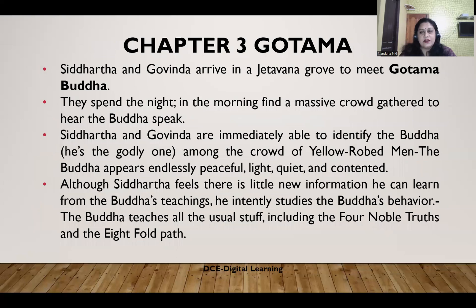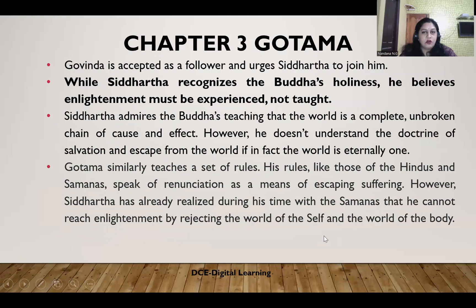Chapter 3 is titled 'Gautama.' Siddhartha and Govinda arrive in Jitavana Grove to meet Gautama Buddha. They spend the night, and in the morning they are overwhelmed to find a massive crowd gathered to hear the Buddha speak. Siddhartha and Govinda immediately identify the Buddha — he appears endlessly peaceful, quiet, and contented. Although Siddhartha feels there is little new information he can learn from Buddha's teachings, he intently studies the Buddha's behavior. The Buddha's teaching covers the four noble truths and the eightfold path. Govinda is accepted as a follower and urges Siddhartha to join him, but Siddhartha and Govinda are not on the same wavelength.